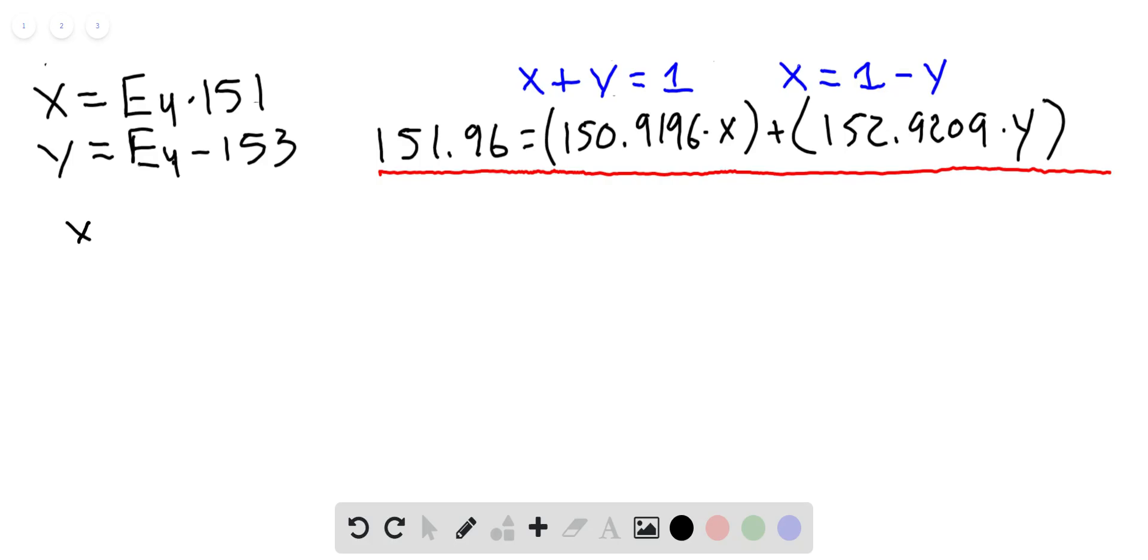It does take a few steps here but we'll take a look and set this up. So now if I have x times the 150.9196 plus y times the 152.9209, and this all equals the 151.96.